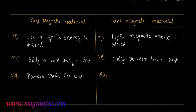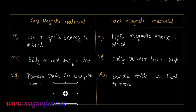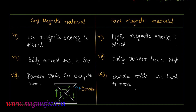Domain walls are easy to move for soft magnetic material, but for hard magnetic material, domain walls are hard to move. We can draw the four domains of ferromagnetic materials, where different molecular magnets are oriented in four different domains. These are the domain walls of ferromagnetic materials, and these are the molecular magnets which are oriented in different domains.